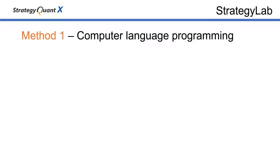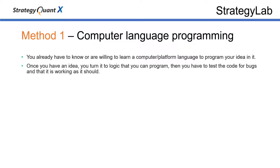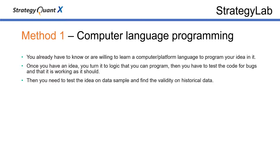Let's discuss the first method, where you program a strategy by yourself. First, you need to be proficient in a computer language, preferably Python or R. Then you need to build your own simulation platform or use one from a vendor. You can also use a proprietary platform and learn its language. Once you have an idea, you write it down into logic the computer can understand, then check the code for bugs and make sure the program is working correctly. Once the code is done, you need to test it on a data sample and do a backtest to find the validity of the idea on historical data.